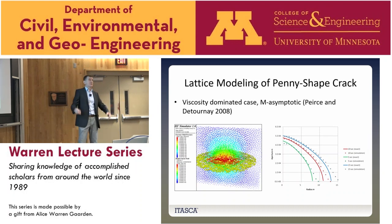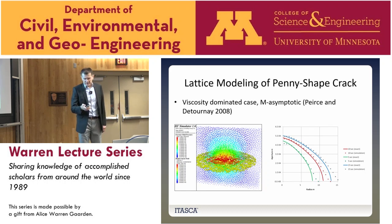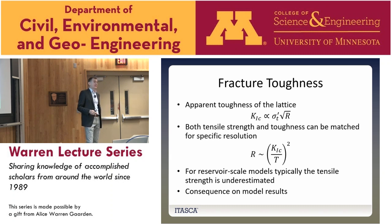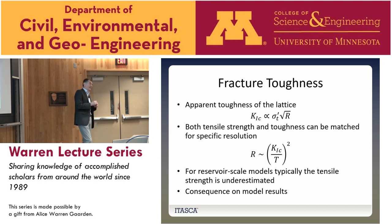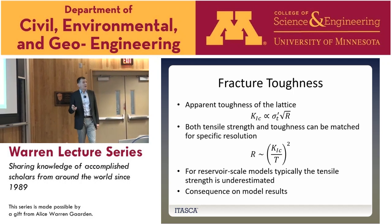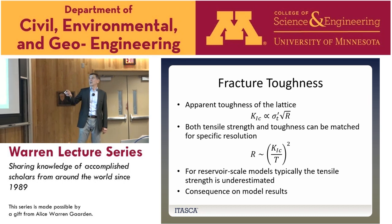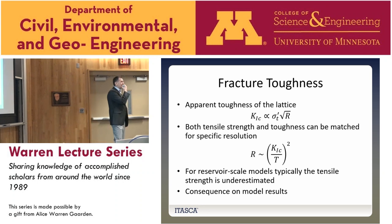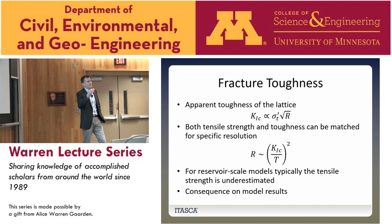We calibrate the model to match elastic properties and strength — specifically tensile strength and UCS. The issue with this particulate model is that if we define the tensile strength of the contacts, then the apparent toughness of that material cannot be set independently — it is a function of tensile strength and particle size. This is something Hying Huang working with Emmanuel, and independently Dave Potyondy and Peter Kandel, discovered. Essentially, in these particulate models we can match both tensile strength and toughness only for a specific resolution.